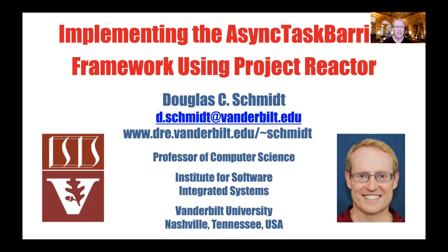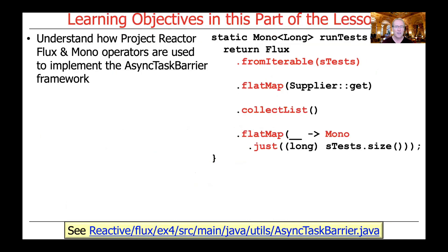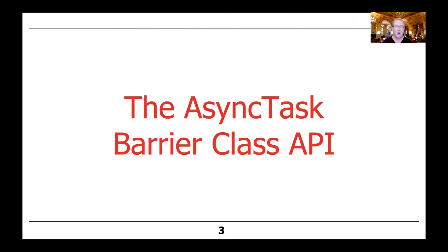We're now going to walk through the implementation of the Async Task Barrier Framework, which has been used throughout our case studies up to this point in order to allow many tasks to run either synchronously or asynchronously and then wait for the completion in the calling thread. This video will show how various operators in Project Reactor's Flux and Mono classes can be used to implement this quite interesting framework.